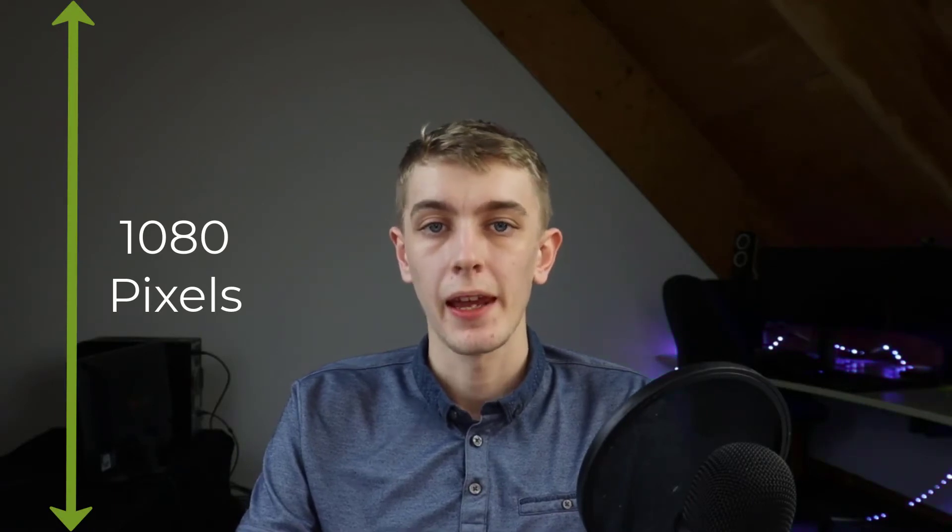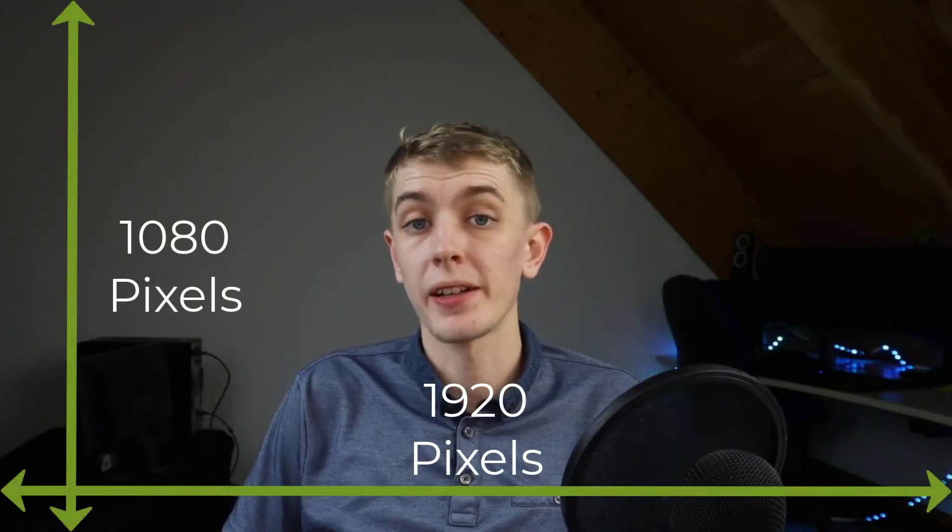We tend to measure resolution by the number of pixels horizontally and the number of pixels vertically. You've probably heard of the terms 720p or 1080p, or even 4K. These phrases refer to how many pixels there are in our video vertically. Aspect Ratio defines how many pixels there are horizontally and how many there are vertically, and then breaks this down into a fraction, commonly either 16 by 9 or 4 by 3.